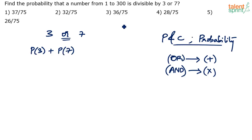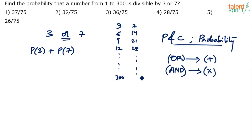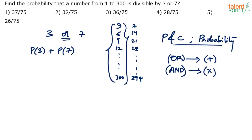What numbers are divisible by 3? 3, 6, 9, 12 and so on up to 300. What numbers are divisible by 7? 7, 14, 21, 28 and so on — I think the last value will be 294. Now, how many numbers from 1 to 300 are multiples of 3? The probability that the number is divisible by 3 or 7 can be taken directly: number of favorable cases divided by total number of cases.